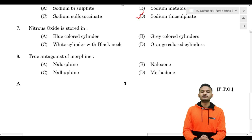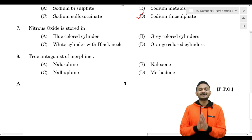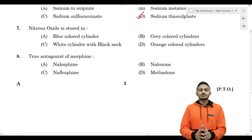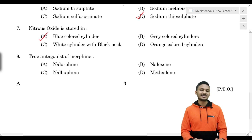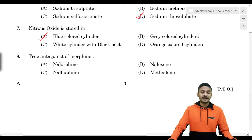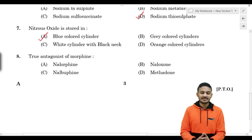For an oxygen cylinder: option C is a white cylinder with black neck, option D is an orange colored cylinder. The correct answer for nitrous oxide uses a blue colored cylinder.